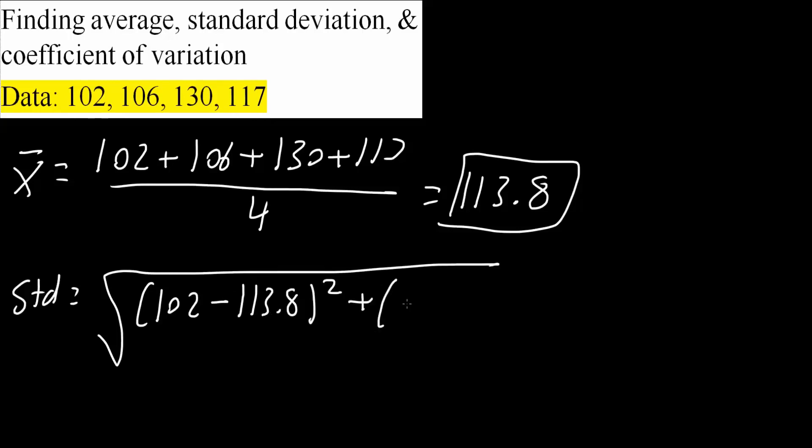Plus 106, the second number, minus 113.8, close parenthesis, squared. Plus 130 minus 113.8, close parenthesis, squared.